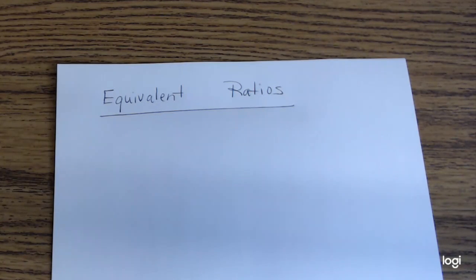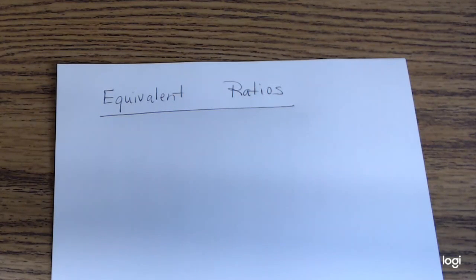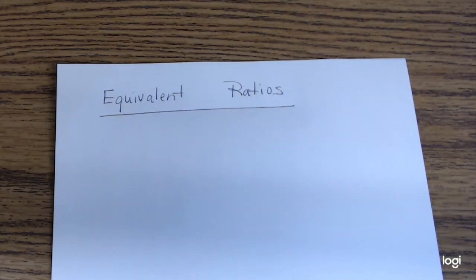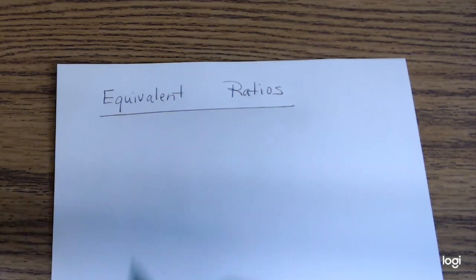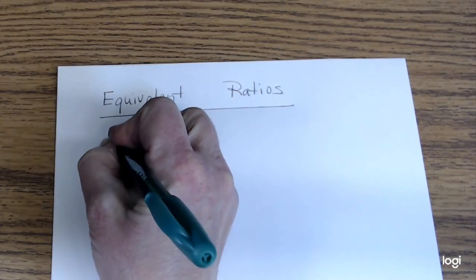Hello and welcome back to math. We're going to review a little bit more on equivalent ratios because some of us are still struggling a little bit. If you recall, equivalent ratios are when we have a ratio and we need to see if they have the same value. I'm going to need you to take out either your math notes or some paper and write these examples down because it's going to help you on your math assignment for today.